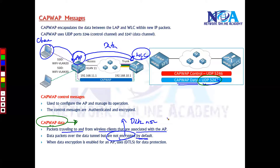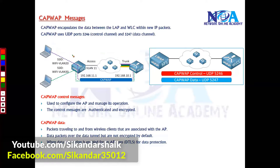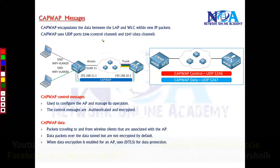If you want, you can enable data encryption on the access point using DTLS data protection. So in summary, CAPWAP uses two different tunnels: one for control messages and one for the actual data being sent from the client to the access point.